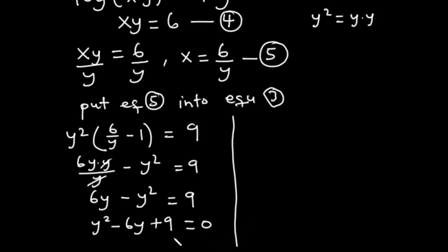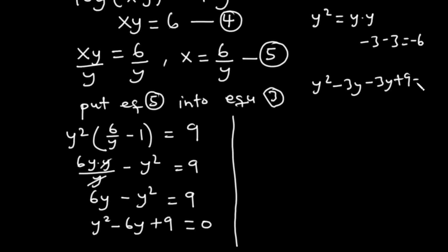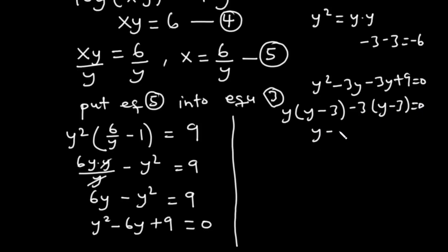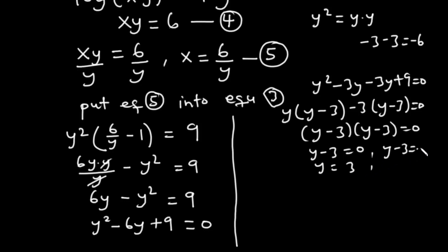We want factors of 9 that add up to negative 6. Negative 3 and negative 3 work: negative 3 plus negative 3 equals negative 6, and negative 3 times negative 3 equals 9. So we expand to y squared minus 3y minus 3y plus 9 equals 0, then factorize: y(y minus 3) minus 3(y minus 3) equals 0, giving (y minus 3)(y minus 3) equals 0. Therefore y minus 3 equals 0, so y equals 3.